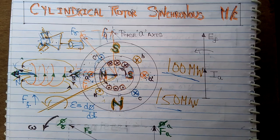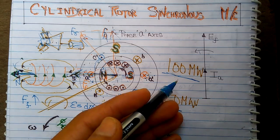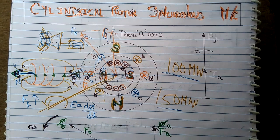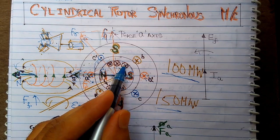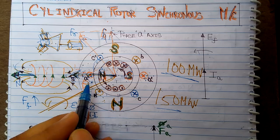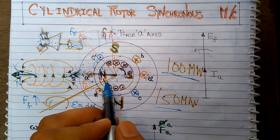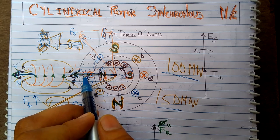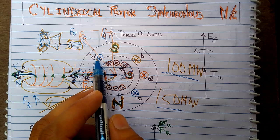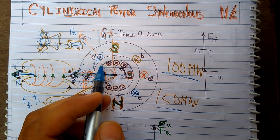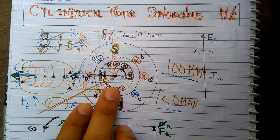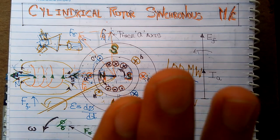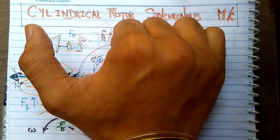Now we jump to our main topic: the cylindrical rotor synchronous machine — an alternator in a power station. What I have drawn is: this is my rotor, this is my stator, these are my rotor windings (dot here, cross here), and these are my stator windings — I call them armature windings. In a synchronous alternator, the field winding is placed on the rotor, not on the stator, while the armature winding is placed on the stator because armature windings carry high current, so it is better to put them on a static part, not on the rotating part.